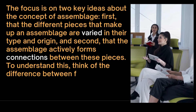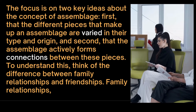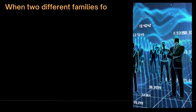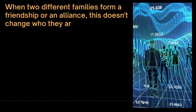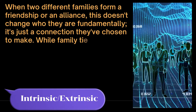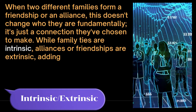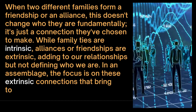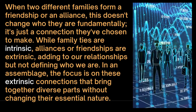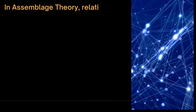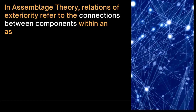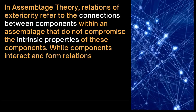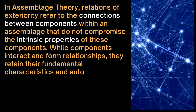To understand this, think of the difference between family relationships and friendships. Family relationships like those between siblings are essential to our identity. When two different families form a friendship or an alliance, this doesn't change who they are fundamentally — it is just a connection they have chosen to make. While family ties are intrinsic, alliances or friendships are extrinsic, adding to our relationships but not defining who we are. In an assemblage, the focus is on these extrinsic connections that bring together diverse parts without changing their essential nature. In assemblage theory, relations of exteriority refer to connections between components that do not compromise the intrinsic properties of those components — they retain their fundamental characteristics and autonomy.